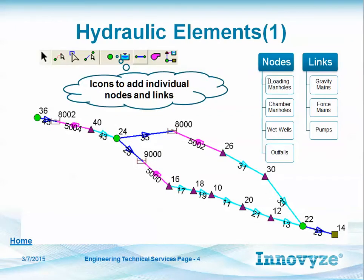There are four types of nodes: loading manholes where the flow goes in, chamber manholes which are pressure nodes or break nodes for force mains, wet wells which are storage nodes that connect to pumps, and outfalls where you can set an HGL boundary condition. Links are gravity mains which use Manning's equation, force mains which use Hazen-Williams, and then pumps. We have three types of pumps: a constant pump, a two-point pump, and a three-point pump.